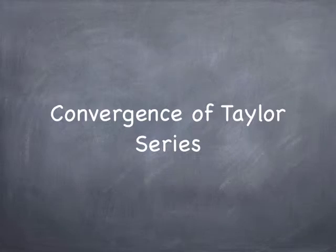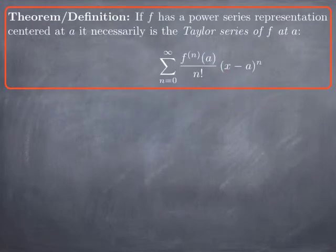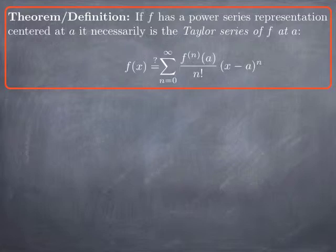As promised, we are now going to look at the question of whether we can conclude that a given Taylor series is equal to the function. Remember that the Taylor series of a function f at a is the only power series representation centered at a possible for the function, given by the power series centered at a for which the nth coefficient is the nth derivative of the function evaluated at a divided by n factorial. We want to know whether this is equal to f of x for a given interval of x values.